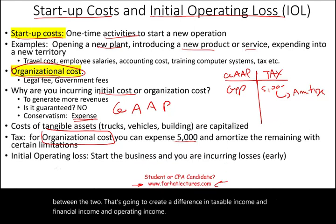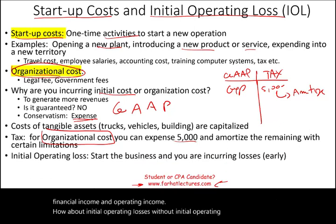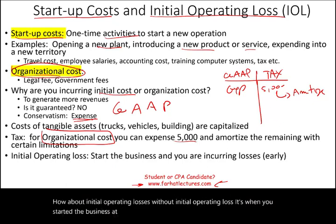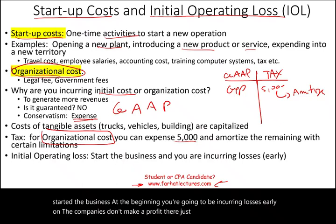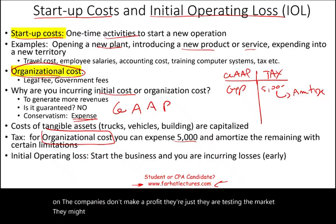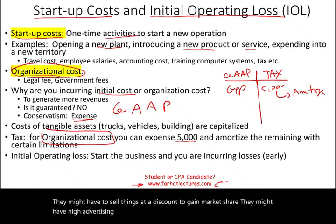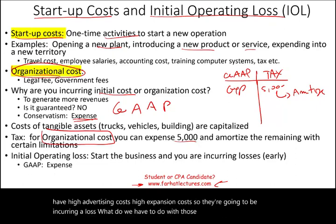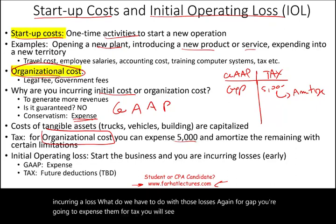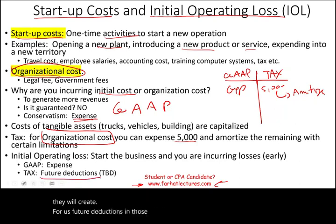How about initial operating losses? What are initial operating losses? It's when you start a business — at the beginning you're going to be incurring losses. Early on, companies don't make a profit. They are testing the market, they might have to sell things at a discount to gain market share, they might have high advertising costs and high expansion costs. So they're going to be incurring a loss. What do we have to do with those losses? Again, for GAAP, you're going to expense them. For tax, those operating losses will create future deductions, and those future deductions might create what's called a deferred tax asset.